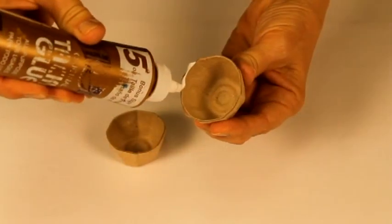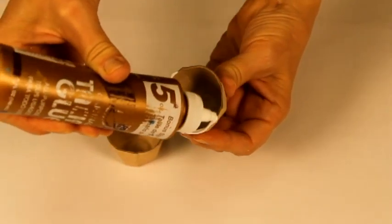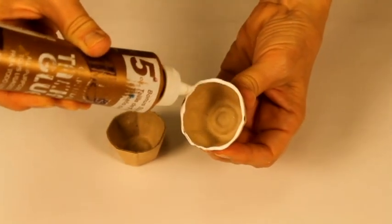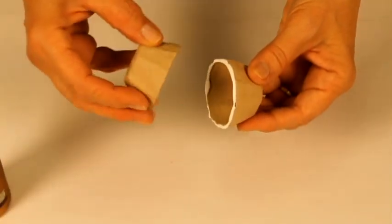To create the body of the spider, put white glue on the edge of a cell and then glue the two cells together by matching them as closely as possible and let dry.